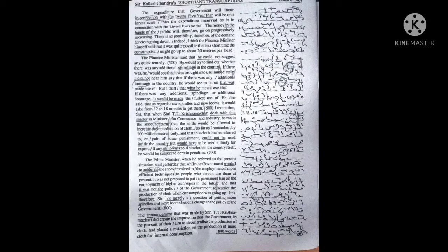He would try to find out whether there was any additional spindleage in the country. If there was, he would see that it was brought into use immediately. I did not hear him say that if there was any additional loomage in the country, he would see to it that was made use of. But I trust that what he meant was that if there was any additional spindleage or additional loomage, it would be made the fullest use of.